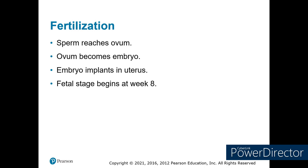If sperm reaches the ovum, it becomes an embryo. As the embryo travels through the fallopian tubes into the uterus, implantation occurs and it starts to develop into a fetus. This usually occurs during the first eight weeks.